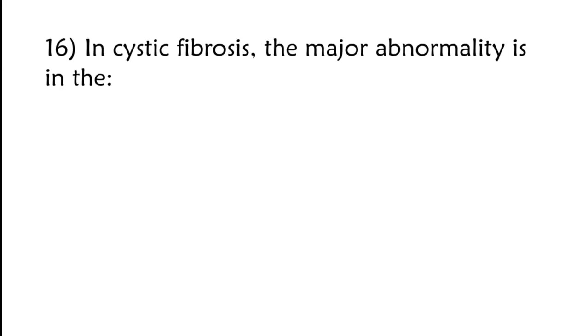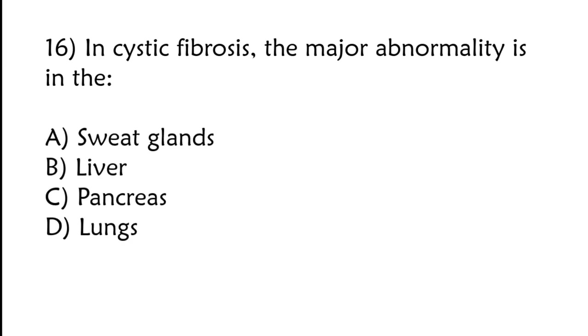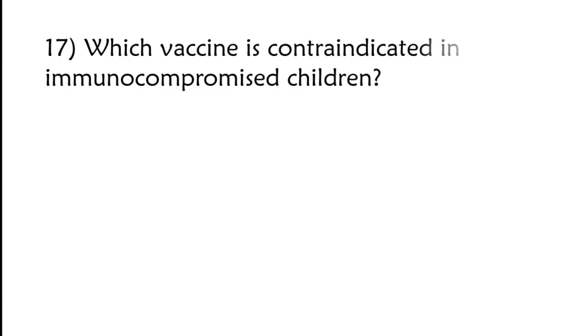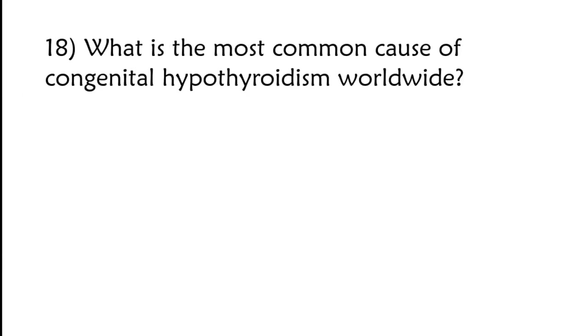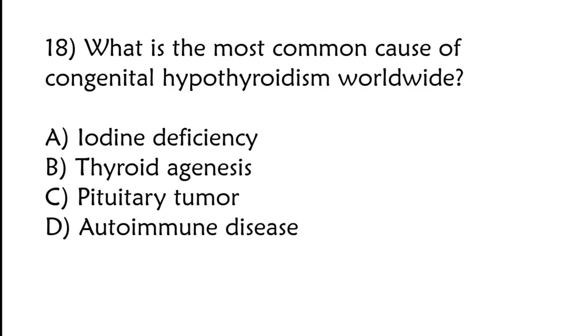In cystic fibrosis, the major abnormality is in the sweat glands, liver, pancreas, lungs. Correct answer is option D, lungs. Which vaccine is contraindicated in immunocompromised children? Hepatitis B, DPT, MMR, IPV. Correct answer is option C, MMR.